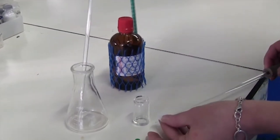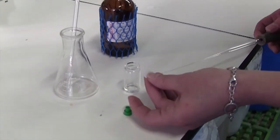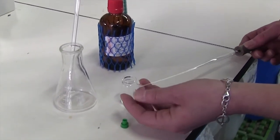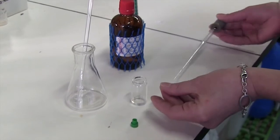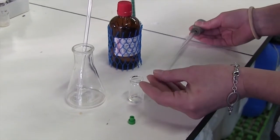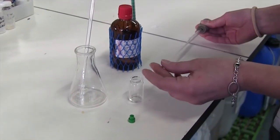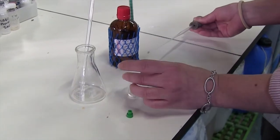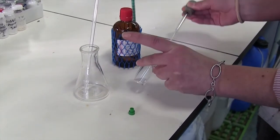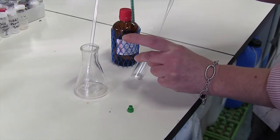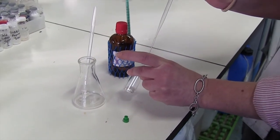Since our sample is turbid, we have to filter it. We shall use a Pasteur pipette with a small piece of paper rolled on its tip. In this way, we take the liquid into the pipette and avoid the solid particles going into the NMR tube. Otherwise, the quality of the spectrum would be very low.